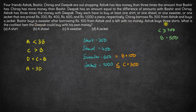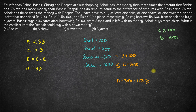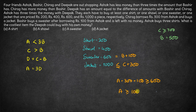Next, Ashok buys three shirts. Ashok will have A minus 300 (given to Chirag) minus 100 (given to Bashir), and with this amount he buys three shirts. So the amount with Ashok should be greater than or equal to the price of three shirts, which is 3 times 200 = 600 rupees. Therefore A should be greater than or equal to 600 plus 400, which is 1000.